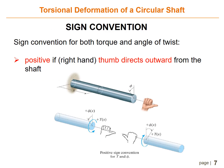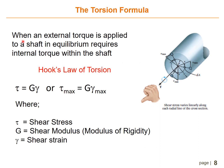For the sign convention, the sign convention for both torque and angle of twist is positive if the right-hand thumb is directed outward from the shaft while the fingers curl in the direction of the torque, as shown in the figure. When an external torque is applied to a shaft, equilibrium requires an internal torque within the shaft. If the material is linear elastic, then Hooke's law applies for torsion, which is: tau equals G times gamma, or tau max equals G times gamma maximum.